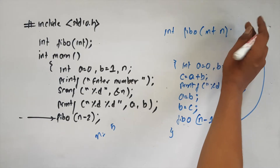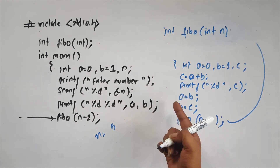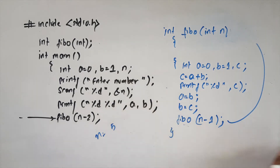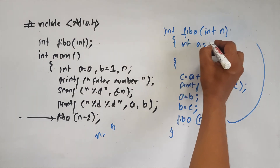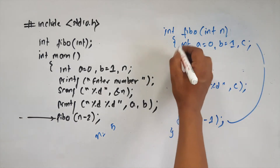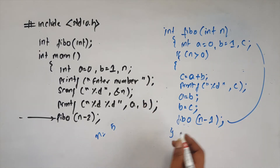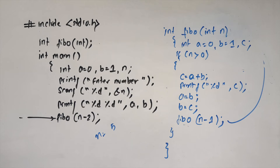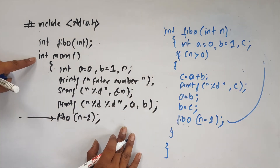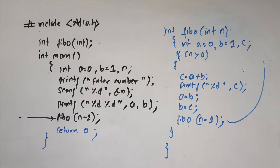int fibo(int n) — this is the definition of the process. We have to do this process: a equals to 0, b equals to 1, c. If n is greater than 0 we continue the process. If n is 0, the function will stop. This is the main function. Return 0. This is the Fibonacci series using recursive function.